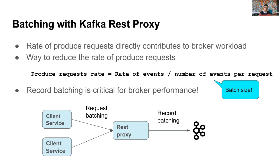With Kafka REST proxy, you can batch events in each request from the client side and rely on the Kafka client in the proxy to further batch them before producing to the broker. The result is a nice effect of event batching across client instances and applications. If an application publishes events at a very low rate, which would lead to inefficient batching, the proxy can mix those low-volume events with other high-volume events in one batch — making event publishing very efficient and greatly reducing the workload for Kafka brokers.